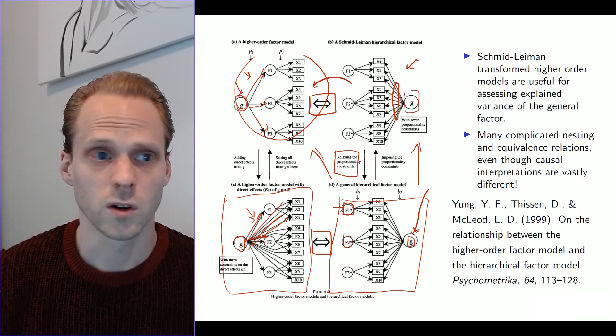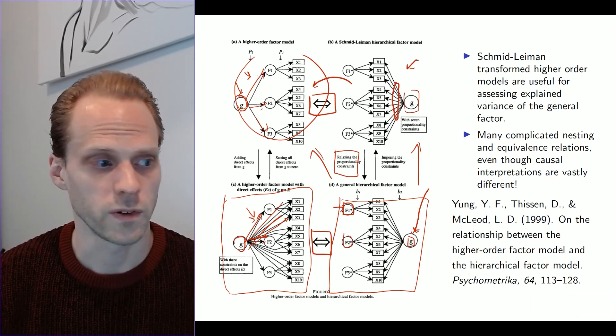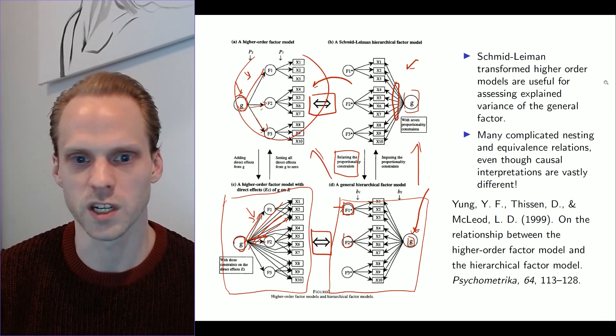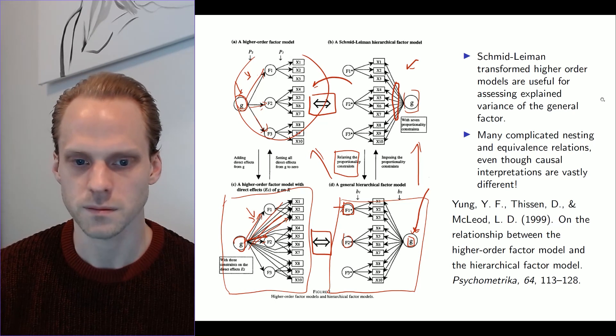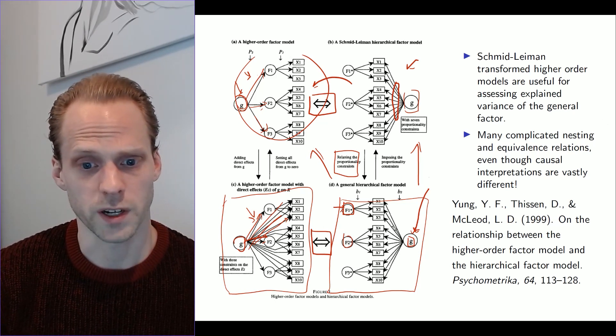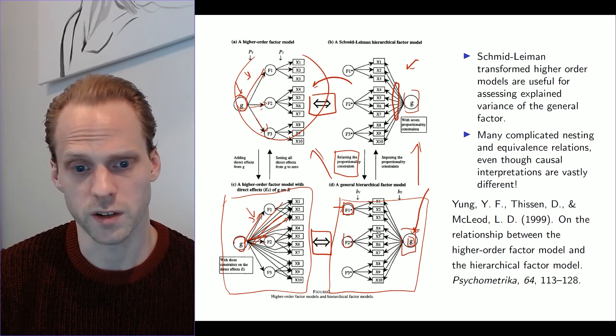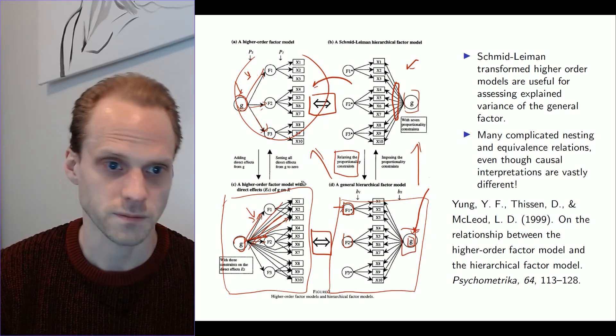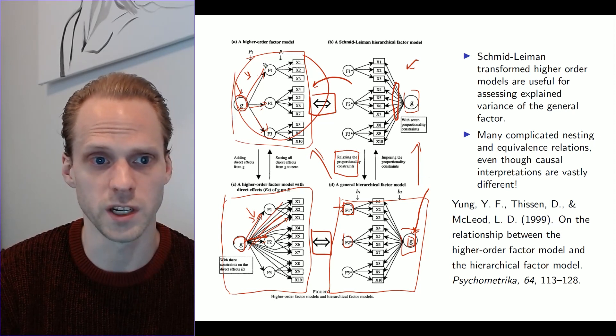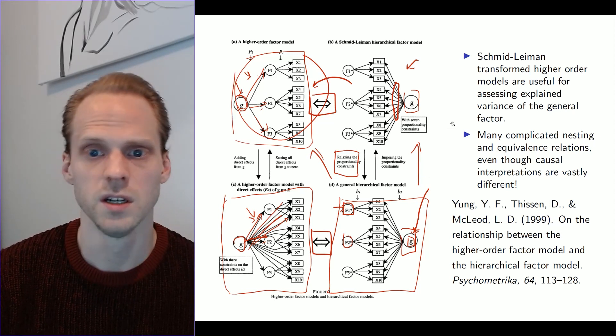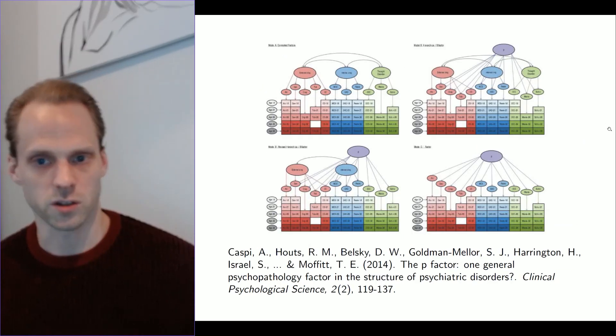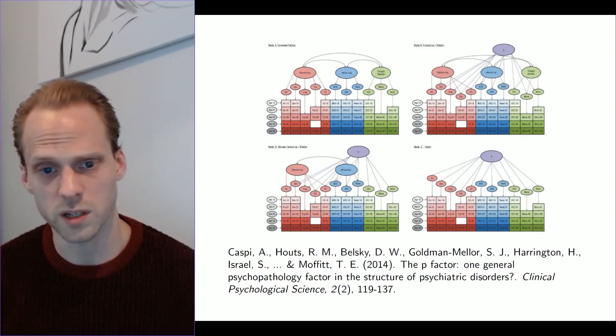So there's some very complicated and weird equivalences and nesting relations between these models. And that also makes choosing between them quite hard, I think. So they have their uses. The general factor is nice. We want to model the general factor directly. This higher-order model is nice if I want to really test this particular hypothesis. But choosing between them is going to be a hard thing. So that's also why I argue a bit to be cautious with them.